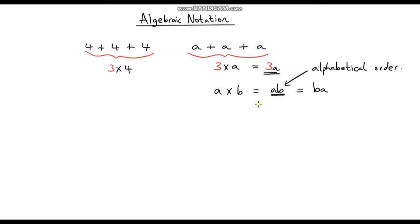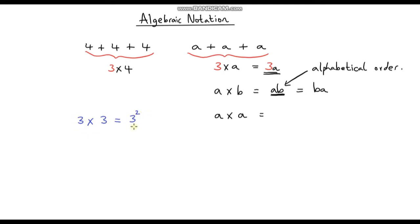Let's do one more example, but this time instead of having two different letters multiplied together, let's say they are the same. So let's say we've got a times a. To think about this, consider if a was a number — say a was 3. So 3 times 3, another way of thinking about that is it's the same as 3 squared. 3 squared is just 3 being multiplied by itself. So a times a is going to be a squared.